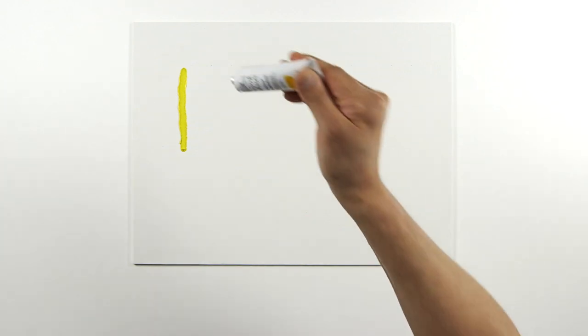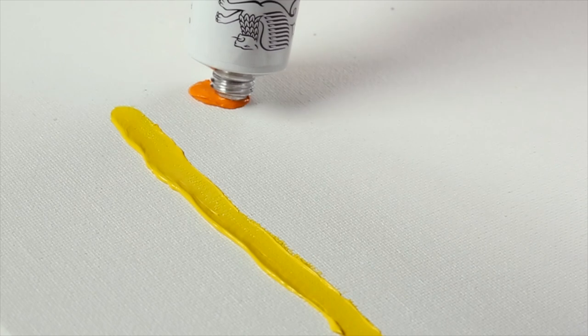Also from the Hansa group is Winsor Yellow Deep, a clean bright yellow pigment.